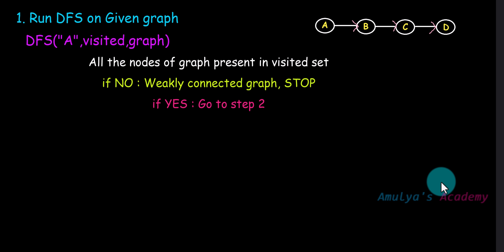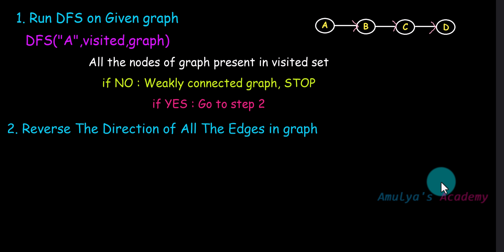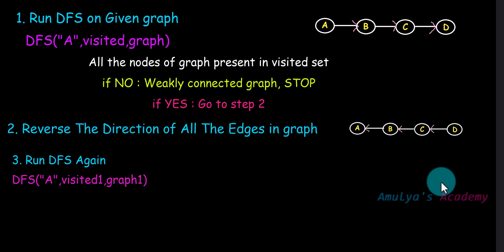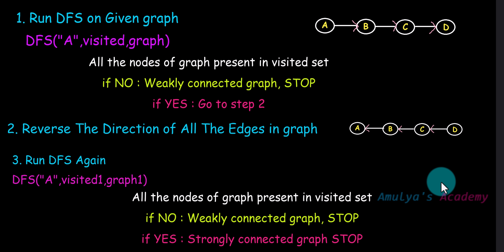The second step is to reverse the direction of all the edges in the directed graph. Then again run the DFS function taking the same starting node — in the first example I took A, so use A again. After executing DFS the second time, if all the nodes are not present in the visited set, then it is a weakly connected graph. If all nodes are visited, that means it is a strongly connected graph. What we are verifying is: if there is a path from the starting node to every other node, there should also be a path from every other node back to the starting node.